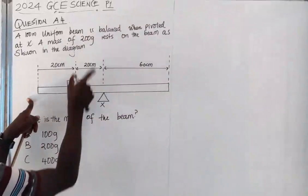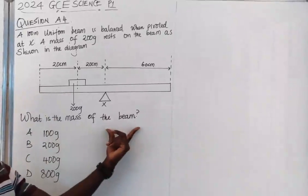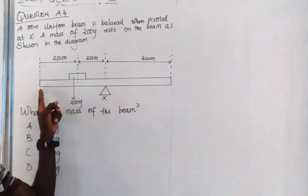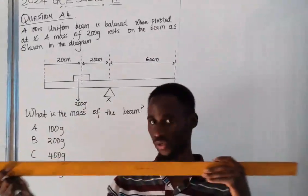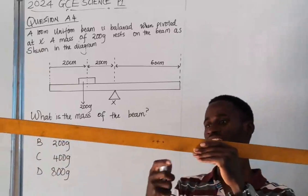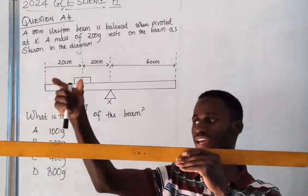This is the mass, the one bigger box here. What is the mass of the beam? Now they're looking at the mass of the entire beam. Imagine this is a beam that we are talking about, right? So they have pivoted it somewhere here, then they have put another mass here. They want you to find the mass of this ruler.